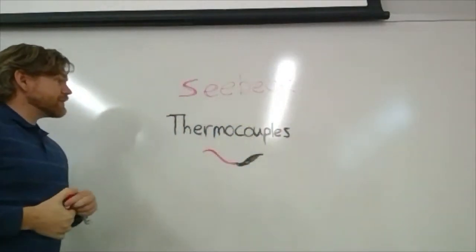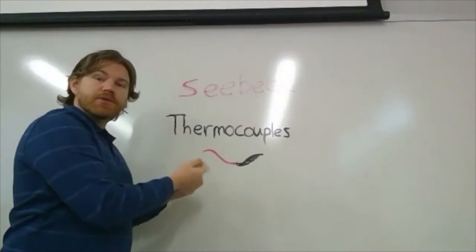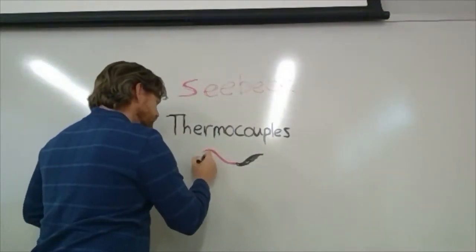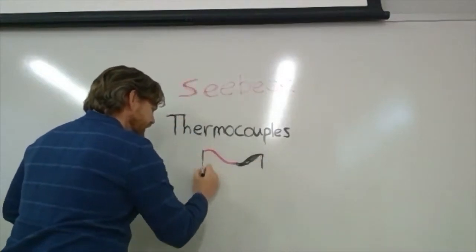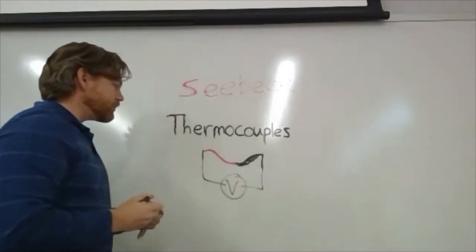And what Seebeck discovered is when he connected two wires of two different metals and then measured the electric potential or the voltage across them, he discovered that indeed they did produce a voltage.